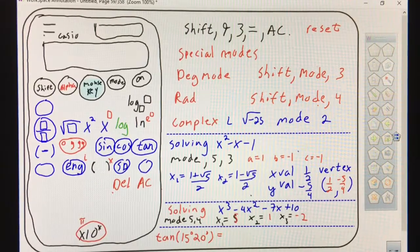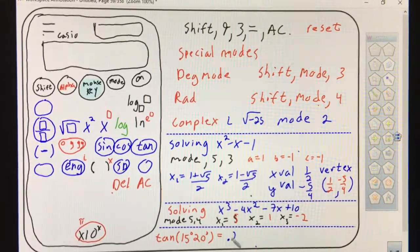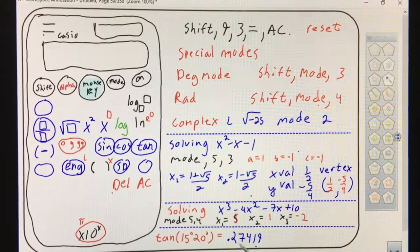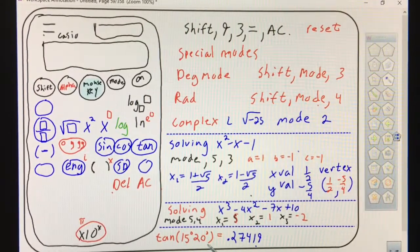When you type that in, the answer if you're in degree mode is 0.27419. I would have gotten that wrong on the test because I was in the wrong mode. You want to be in the right mode, degree mode.